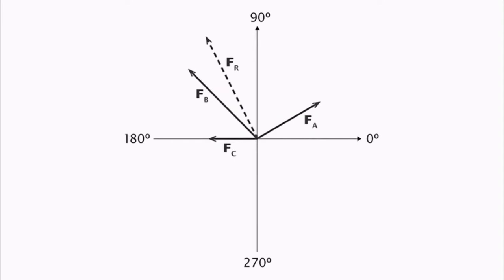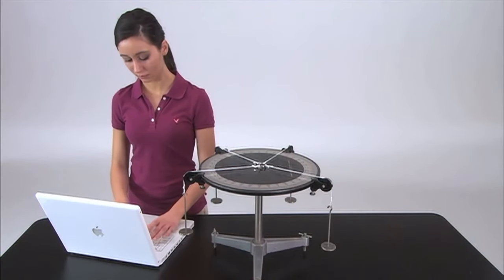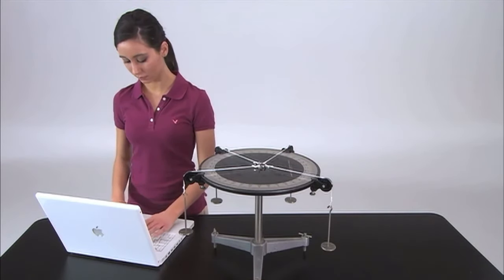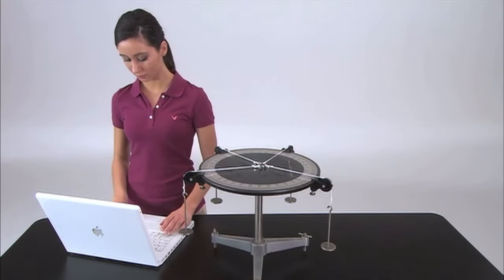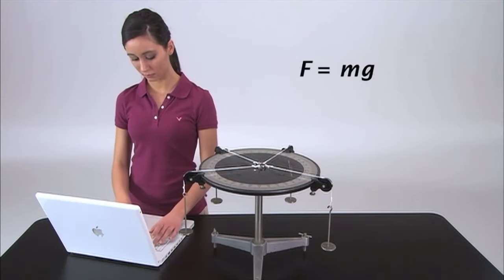Using the values of the magnitude and direction of the resultant force, calculate and record values for the magnitude and direction of the equilibrium force. The magnitude of the equilibrium force will be the same as the magnitude of the resultant. The direction of the equilibrium will be 180 degrees from the direction of the resultant. To apply an equilibrium force on the force table, you will hang a mass from a fourth string attached to the ring. Calculate and record the mass required to produce a weight equal to the equilibrium force.